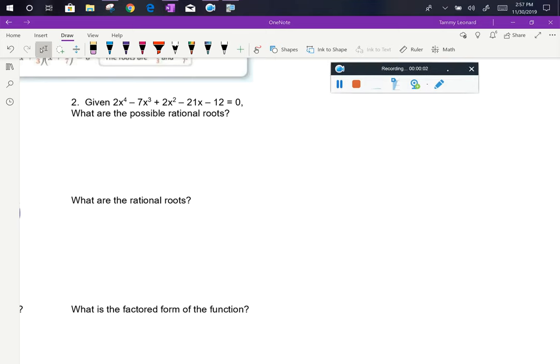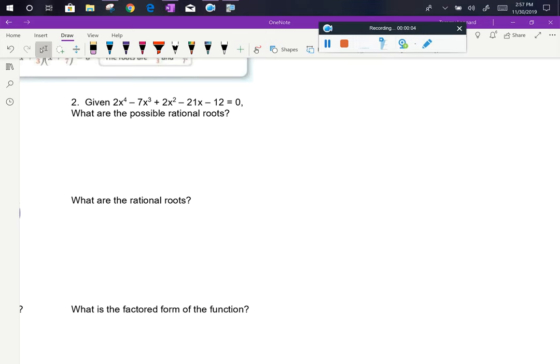All right, let's take a look at problem number two. Given 2x to the fourth minus 7x cubed plus 2x squared minus 21x minus 12 equals zero, first what are the possible rational roots?